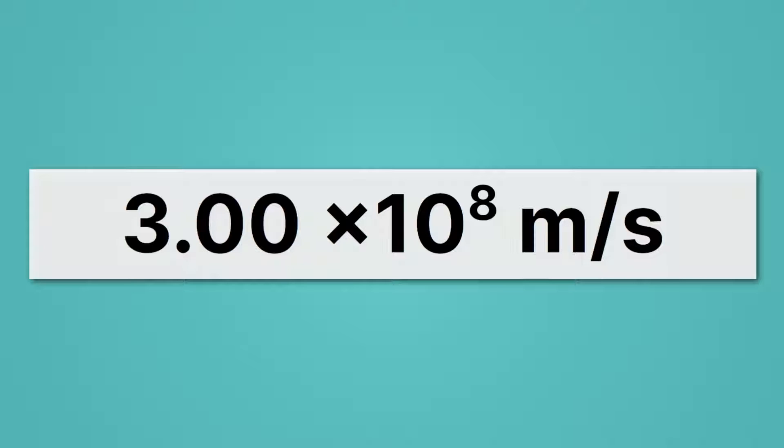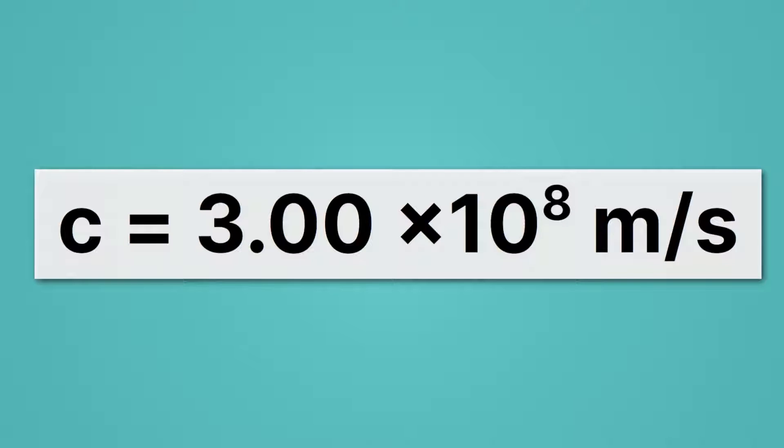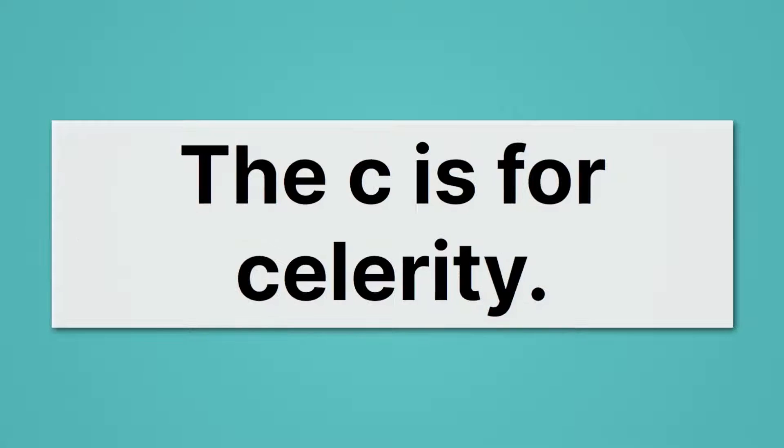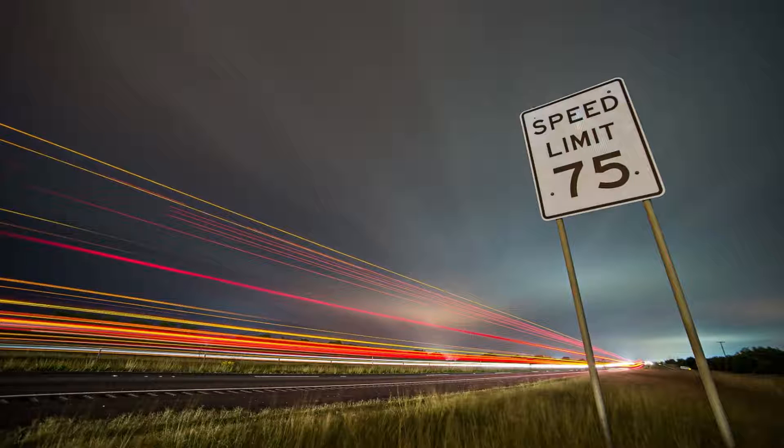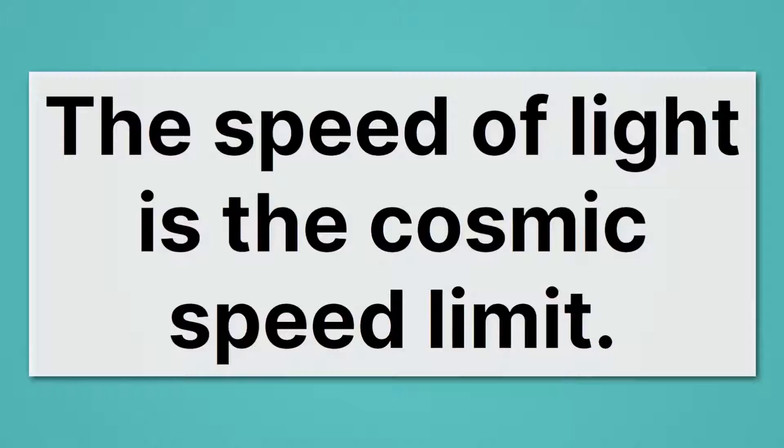The speed of light is so important and shows up in so many equations that we actually give it its own special variable, c. We use c for the speed of light. That c stands for celerity, which is just a Latin word for swiftness or quick. You might notice that c shows up in all sorts of mathematical equations, like for example, E equals MC squared. That c is the speed of light.